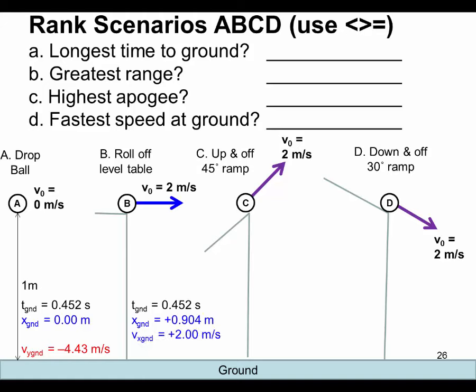Its x velocity at the ground is 2 meters per second. We have a constant x velocity because there's no forces acting in the x direction. And our y velocity increases to negative 4.43 meters per second. So it's going at quite a quick speed when it's hitting the ground. It has an x component and a y component.